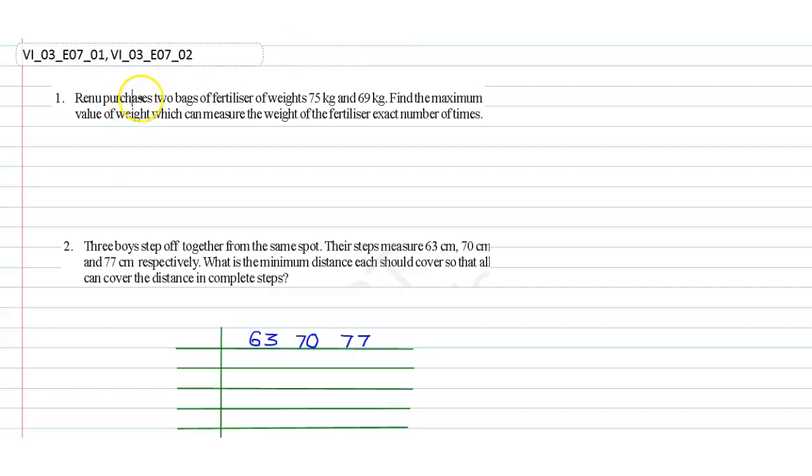In this video we are going to solve question number one and two. Question number one: It is given that Renu purchases two bags of fertilizer of weights 75 kg and 69 kg. Find the maximum value of weight which can measure the weight of the fertilizer exact number of times.